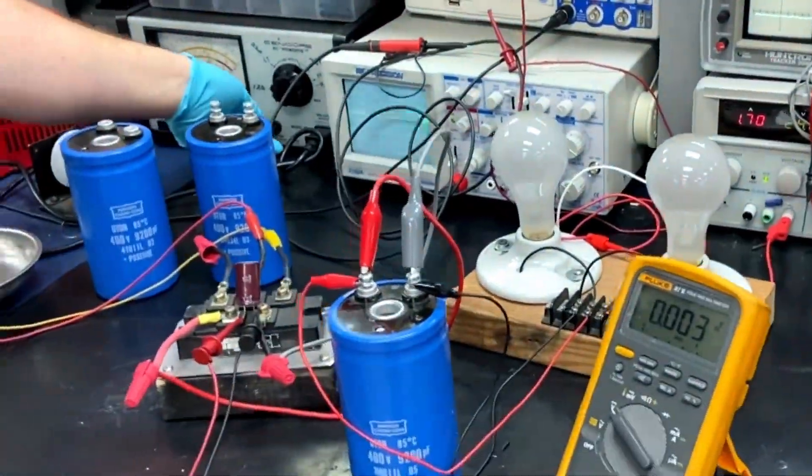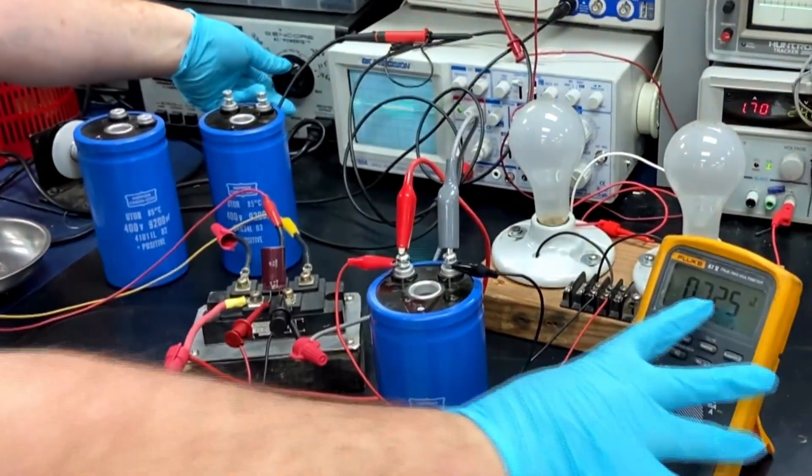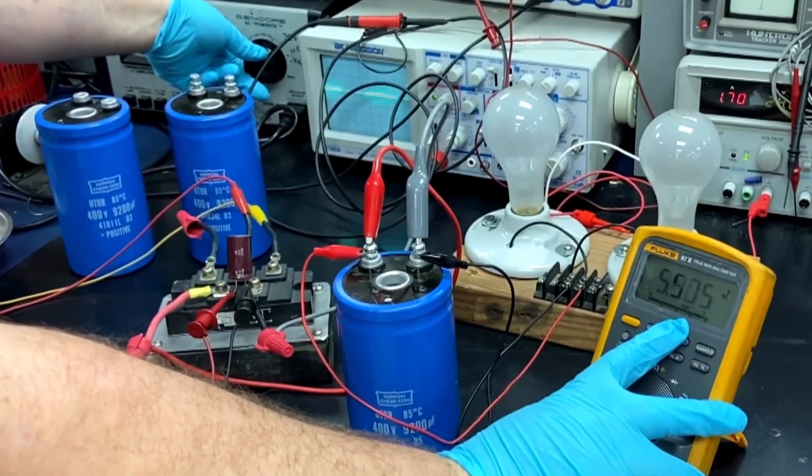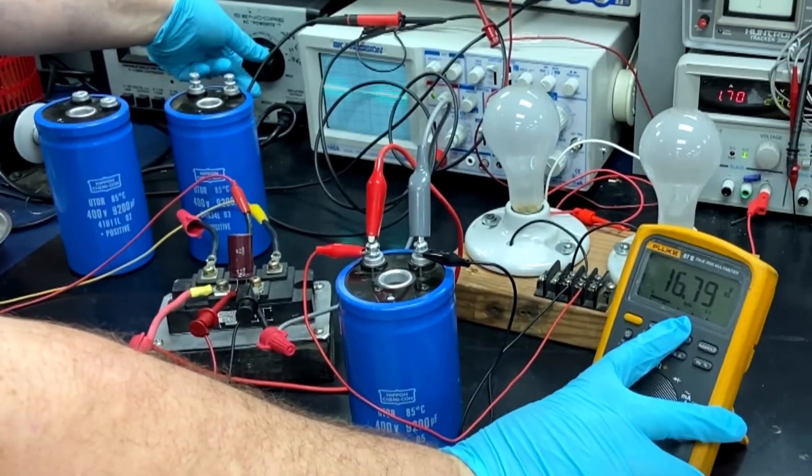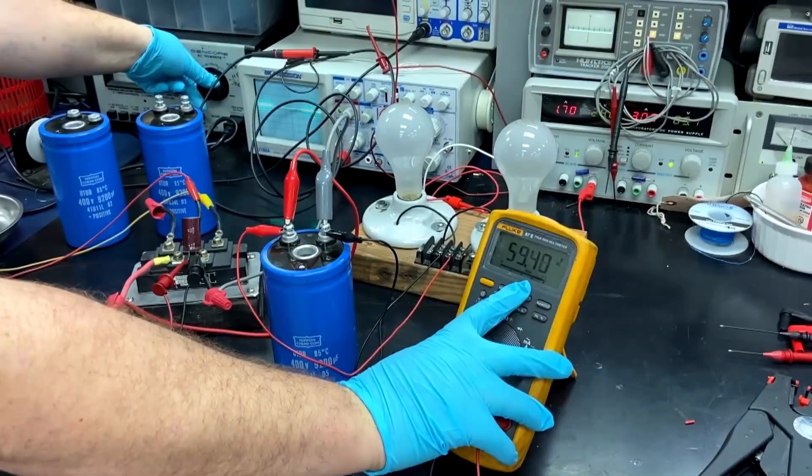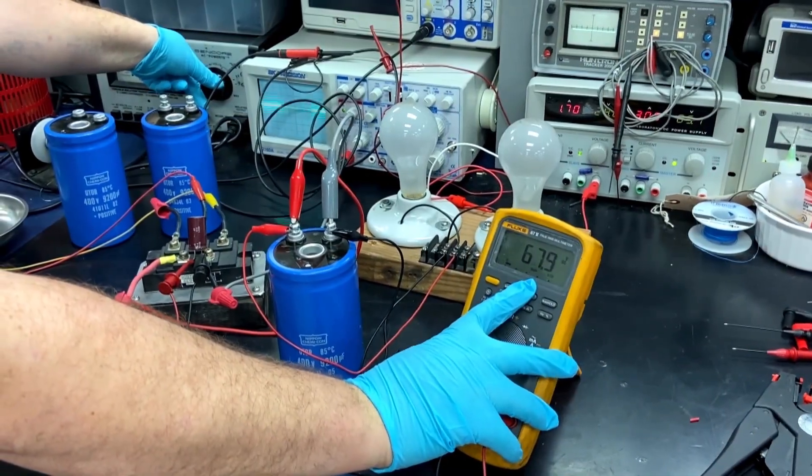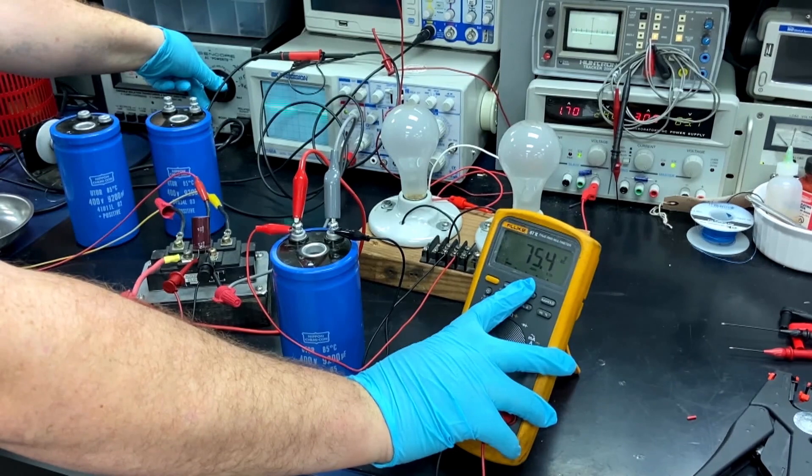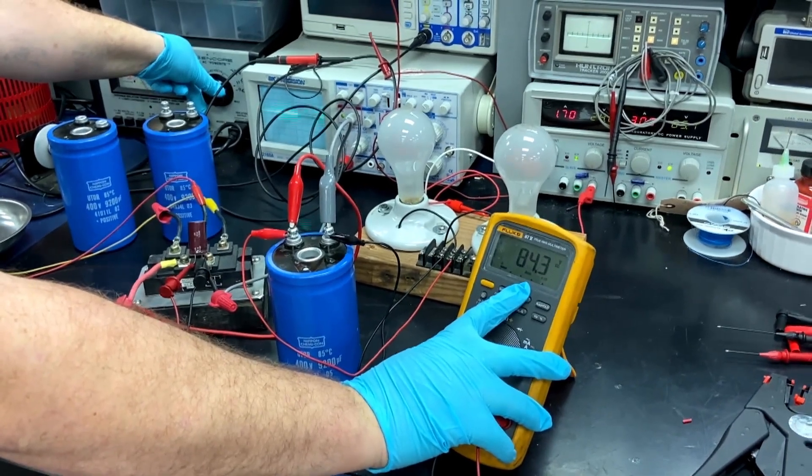We will begin at zero volts and gradually bring it up. We are at 50 volts. Now these capacitors are rated for 400 volts. So we are just going to slowly bring up the voltage.